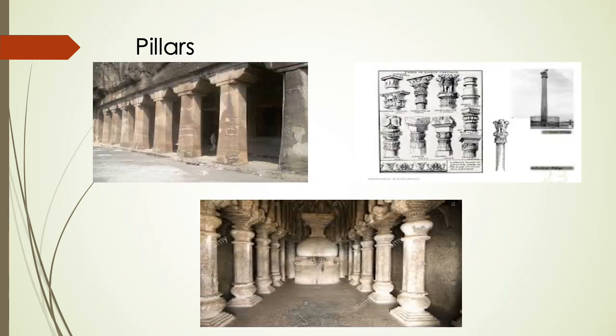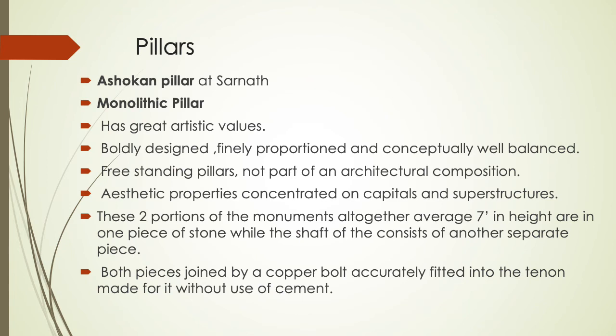The next one is pillars. Pillars of the Buddhist period were different from pillars of Greek, Egyptian, and Roman traditions, because these are not only for building. Some pillars are just for holy purposes and for decoration — they have no link with the weight or construction of a building. The Ashokan pillar is very famous, particularly at Sarnath, and monolithic pillars are also found. Monolithic pillars have great artistic values. The Ashokan pillars are finely proportioned and conceptually well balanced.